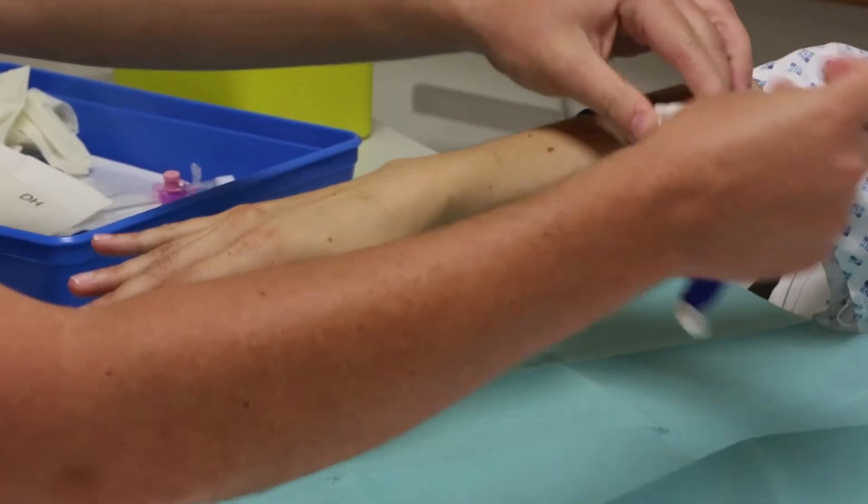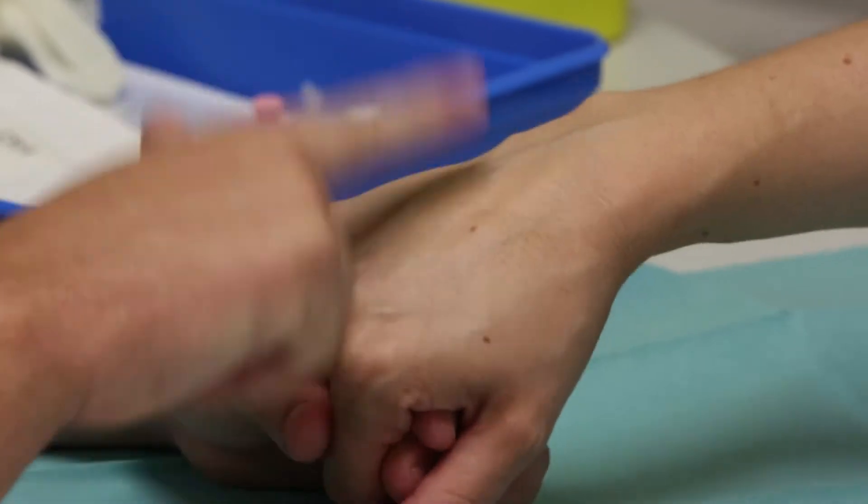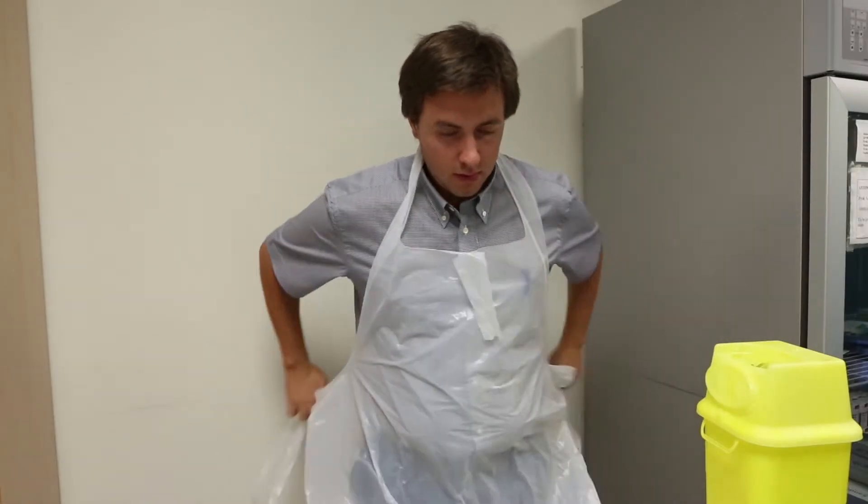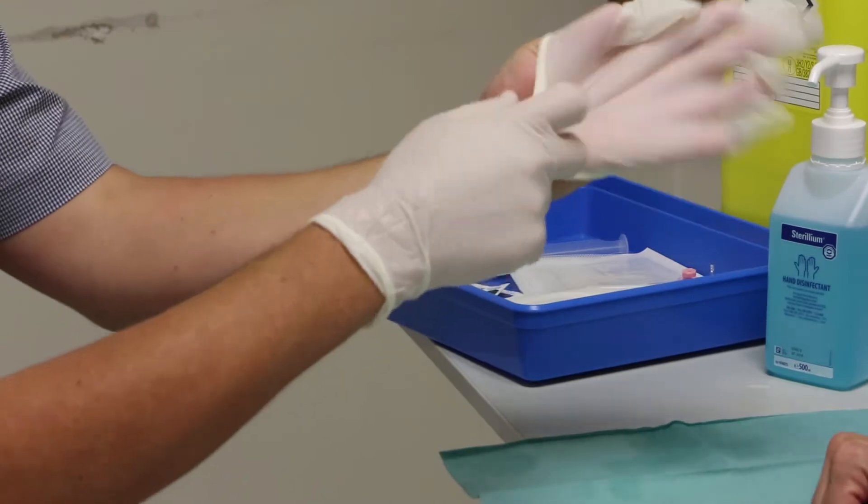Step 7. Apply the tourniquet and locate a vein. Step 8. Put on an apron, apply alcohol hand rub and wear non-sterile gloves.